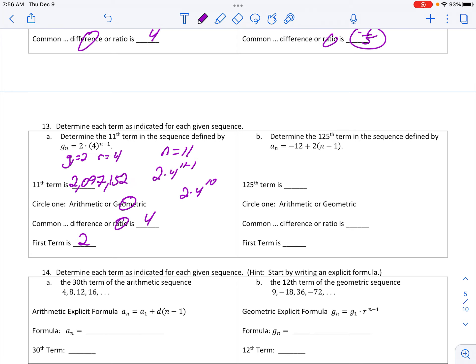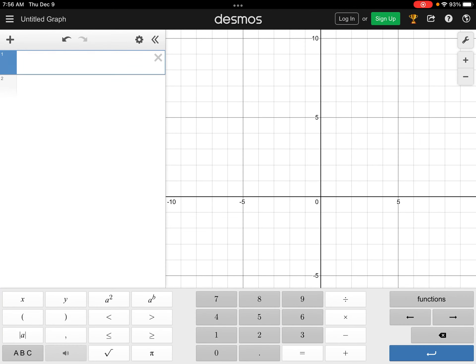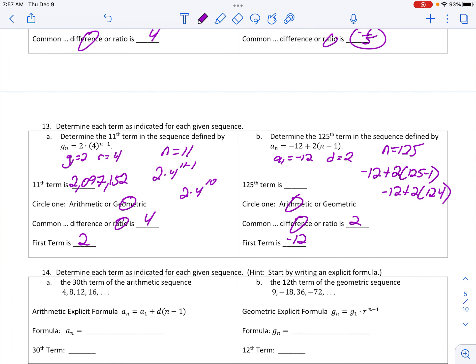Letter B, we should look very familiar. We've been doing a lot of work with that one. That is arithmetic. That means we have a common difference. A sub 1, the first term is negative 12, and we are moving by a common difference of 2. So N is 125. They specifically say find the 125th term. So I go to my formula, plug in 125, do a little mental math right there and say 124. Then I go to my calculator and type that in. Negative 12 plus 2 times 124. 236 then.